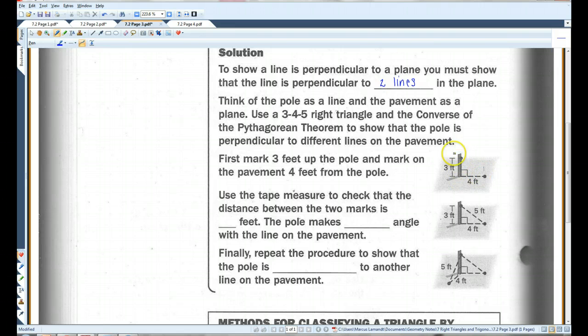So, if this is a right triangle, this has to be five feet. So, we use the tape measure to check that the distance between the two marks is five feet. By the way, I didn't mention this, but the reason it has to be five feet is because 3-4-5 is a Pythagorean triple.